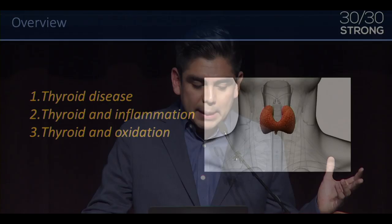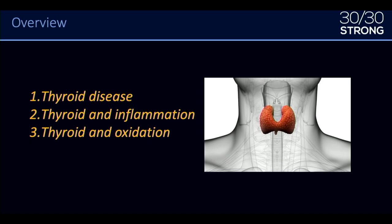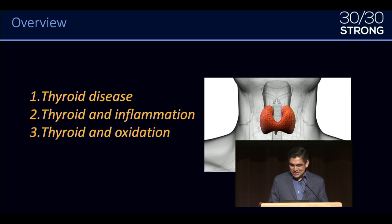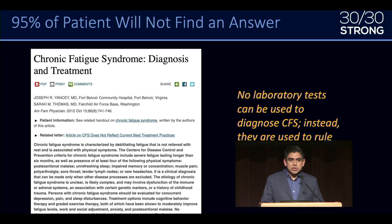Today I want to talk about some evolutionary perspectives on thyroid disease. This is a pretty cool topic. I work at an endocrinology practice and most of my patients have a thyroid concern. In this presentation, we're going to go through thyroid disease — what is it, thyroid and inflammation, and thyroid and oxidation. We're going to riff on a previous presentation from AHS-12 and hopefully get some oohs and ahs because of all these evolutionary connections we can make.